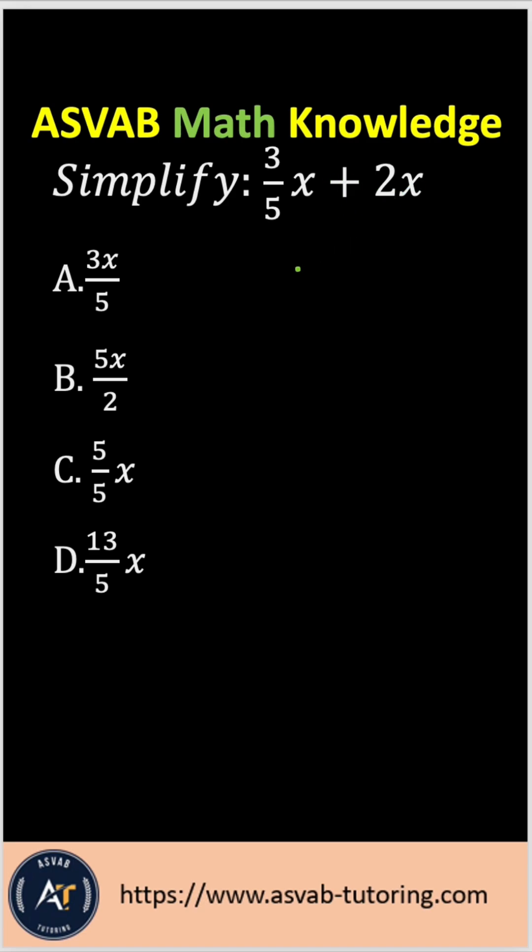Let's apply a trick to solve this problem the easy way. First of all, 3 over 5x you could write as 3x over 5, and 2x you could write as 2x over 1.